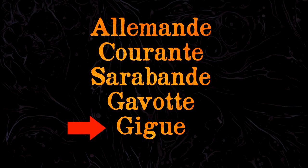The Gigue is typically the last dance of a Baroque Suite, and is characterized by a quick tempo. But before we get into the traits of the Gigue, we need to discuss the origins of the dance.